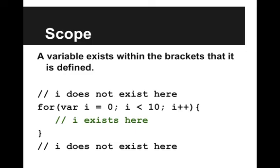So we have our common for loop here. We declare a variable i equal to zero, i is less than 10, i plus plus. i exists for the duration of the for loop in the body of the for loop, but does not exist before the for loop or after the for loop.